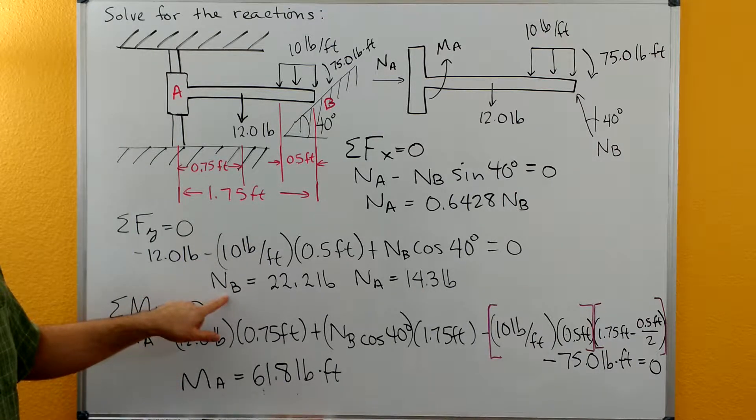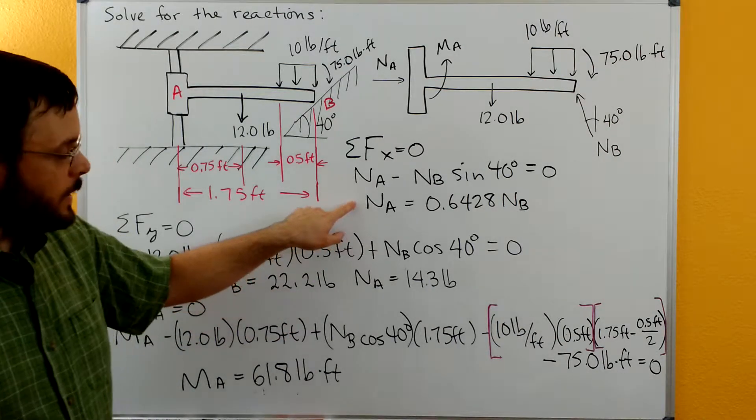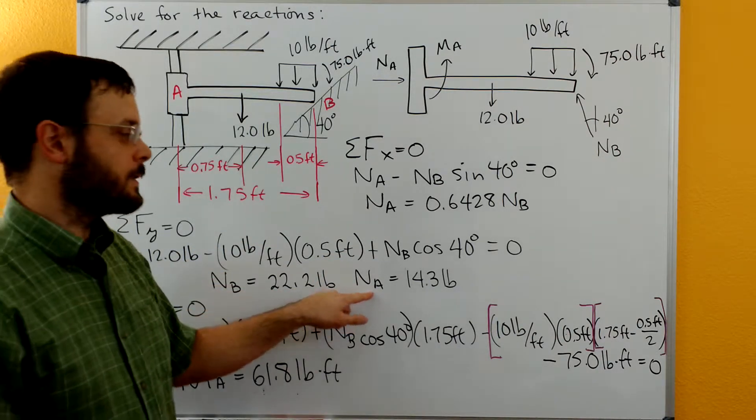That allows us to solve for N_B and get 22.2 pounds. Plug that back in up here for N_A and get that N_A is 14.3 pounds.